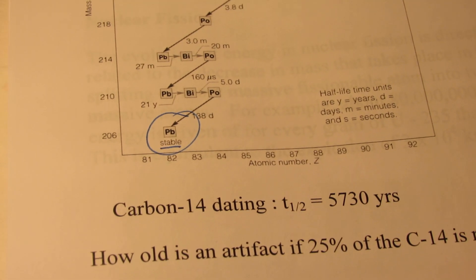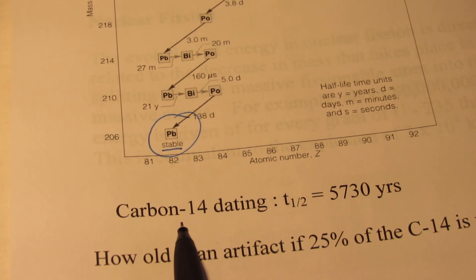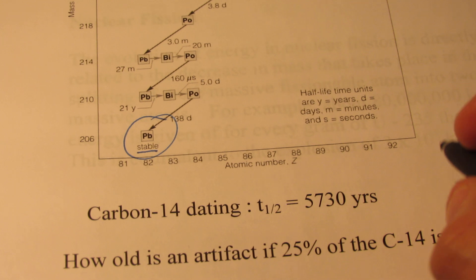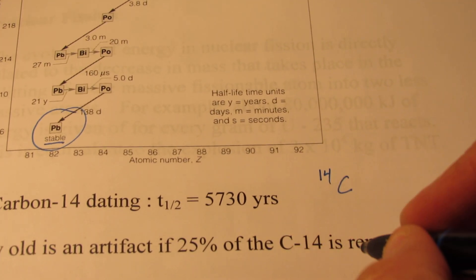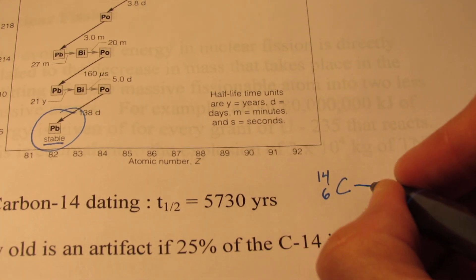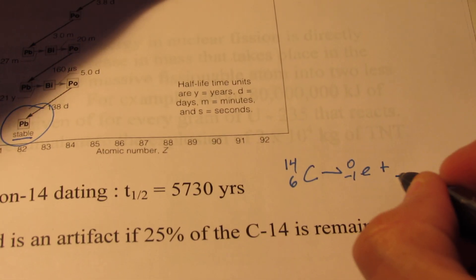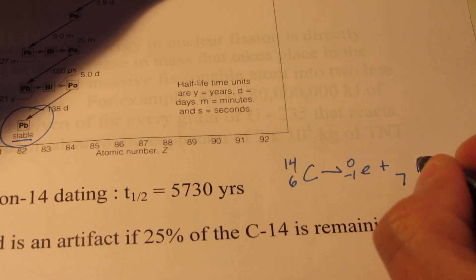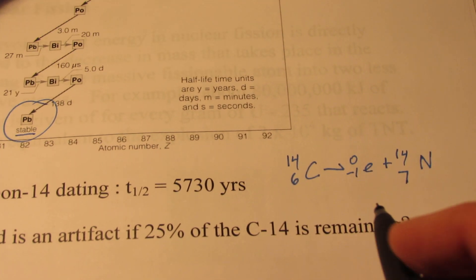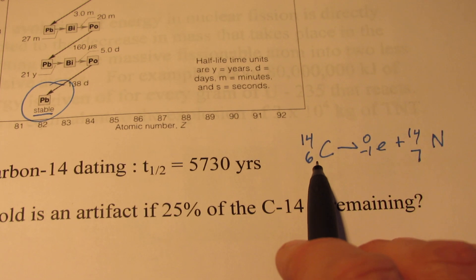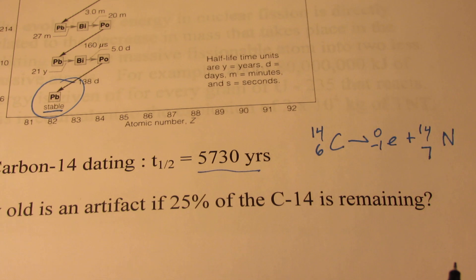Perhaps the most common half-life discussed is that of carbon-14. Carbon-14 is a beta emitter. Let's do the reaction: carbon-14 with atomic number 6 gives off a beta particle. What do we end up with? This will be atomic number 7, which makes it nitrogen, and the mass is still 14. For one-half of carbon-14 to decay into nitrogen-14 takes 5,730 years.